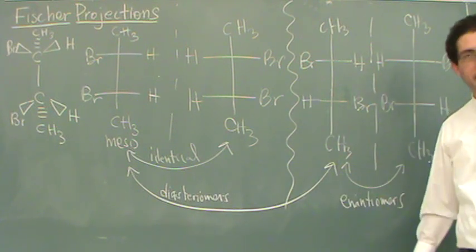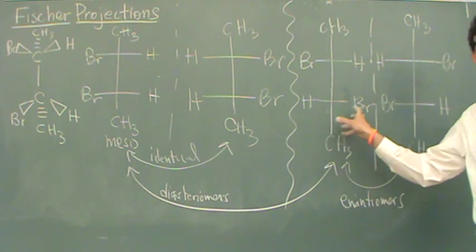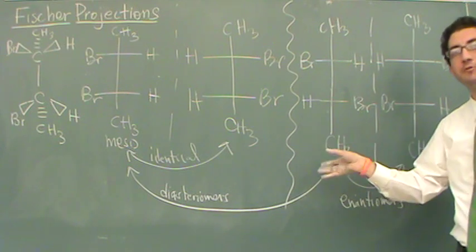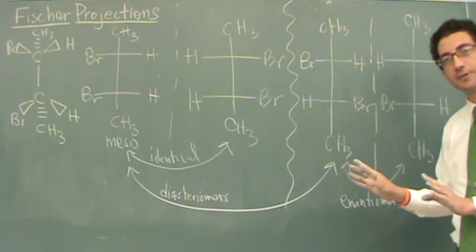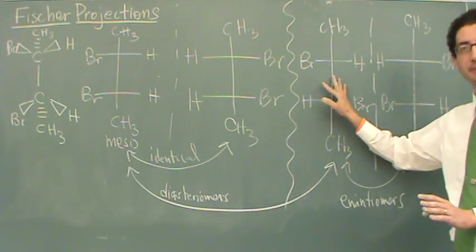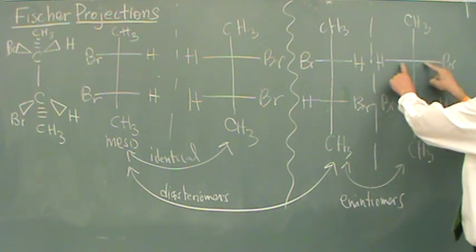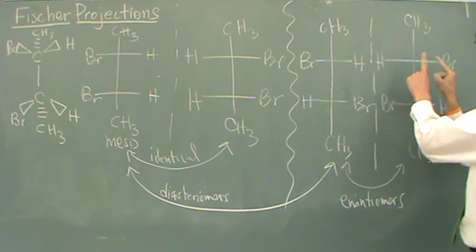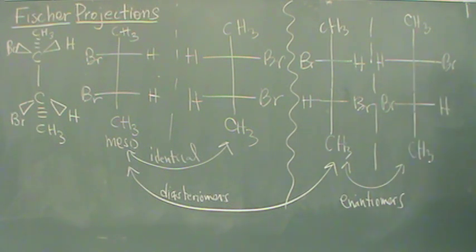You can never flip them like a pancake, but you can rotate them 180 degrees. So a rotation of 180, totally okay for a Fischer, but you can never flip them like a pancake. Because that would cause the horizontal line not to be pointed out towards you.